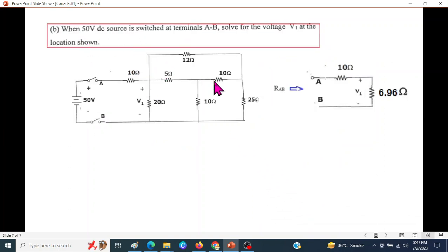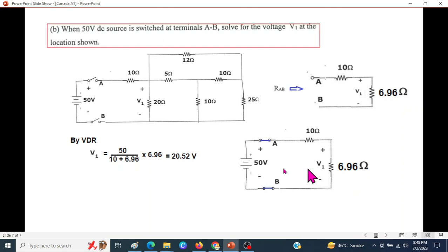The next part, again we have to connect the voltage source to the circuit. The equivalent we have calculated is here. We have to find the voltage V1 here. We connect the power to 50 volt. Now this is simple, a voltage division circuit, 50 volt divided in between these two resistances. We will use the VDR.